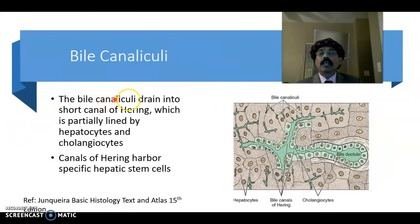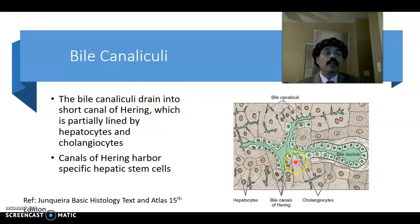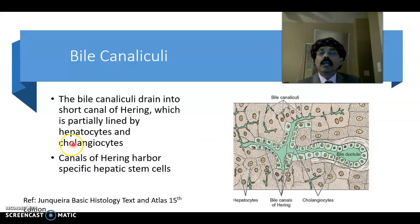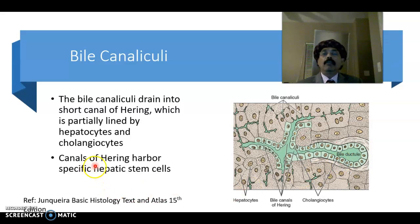Bile canaliculi drain into short canals of Hering. The canal of Hering is lined by hepatocytes and cholangiocytes — cholangiocytes being the cells in contact with the bile. The canal of Hering also harbors specific hepatic stem cells.